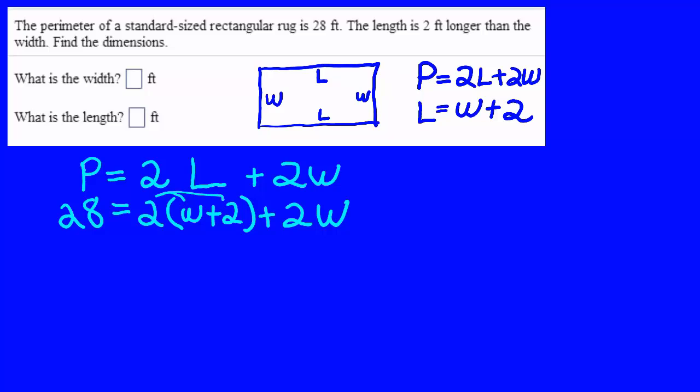Now I'm going to distribute because I have a number on the outside of the parentheses. 28 will equal 2W plus 2 times 2, which is 4, plus the 2W at the end, which was not in the parentheses.